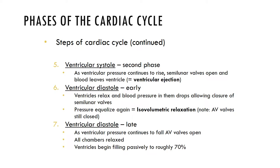Ventricular diastole has an early and late phase. In the early part, as the ventricles relax, pressure drops. Blood flows back against the semilunar valve cusps, forcing them closed, but pressure has not dropped low enough to open the AV valves. Blood flows into the relaxed atria but cannot enter the ventricles — this is the period of isovolumetric relaxation. In late ventricular diastole, all chambers are relaxed again. The AV valves open and the ventricles passively fill with blood from the atria to about 70% of their volume, while the semilunar valves remain closed.